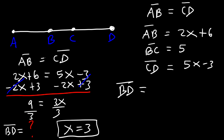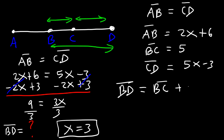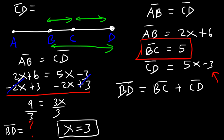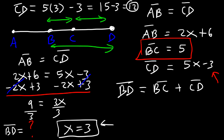Now our goal is to find BD. Segment BD is the sum of BC and CD. We already have BC equals 5. So we plug x equals 3 into CD: CD equals 5 times 3 minus 3, which is 15 minus 3, which equals 12. So BD equals BC plus CD, which is 5 plus 12. Segment BD is 17 units long.